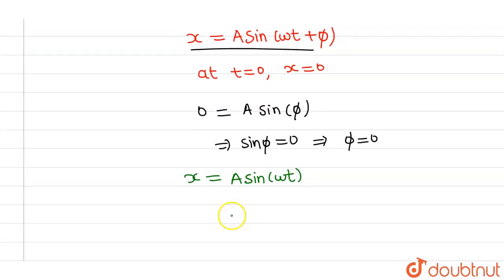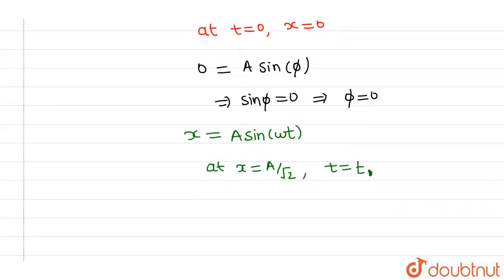Now let me put that at x equals A by root 2, the time is, let's say, t1. t1 is the time taken by the particle to go from 0 to A by root 2. So if I put this condition in this particular equation, I will be getting A by root 2 equals A sin omega t1.